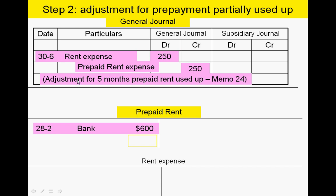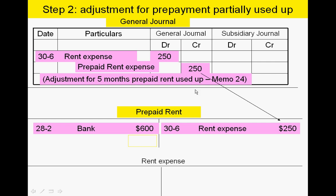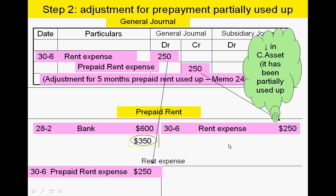Make sure in your narration you briefly explain the transaction, specify the time period that's been used up, and identify the source document to support the audit trail — it will always be a memo. When posting to the general ledger, do a credit entry to the asset account because it's been partially consumed, and a matching debit entry to the rent expense account, supporting the reporting period principle.